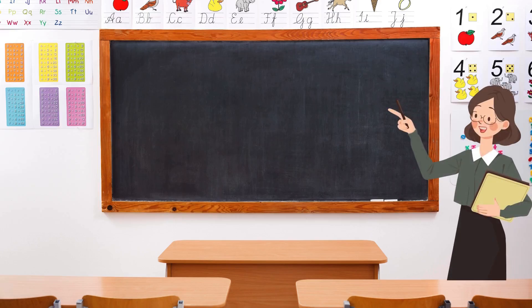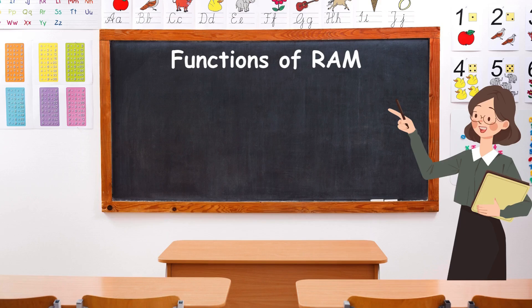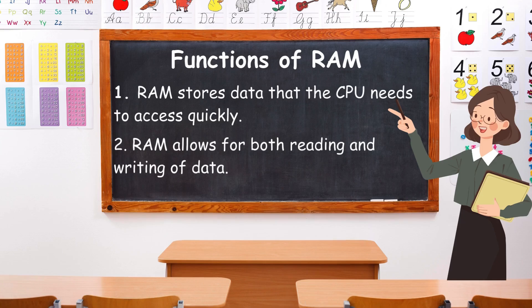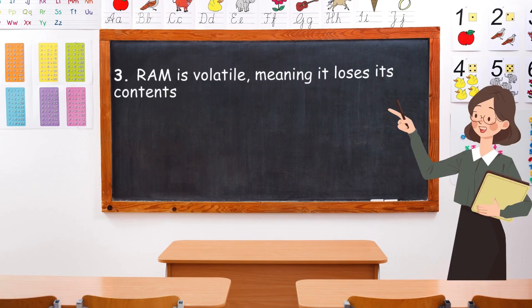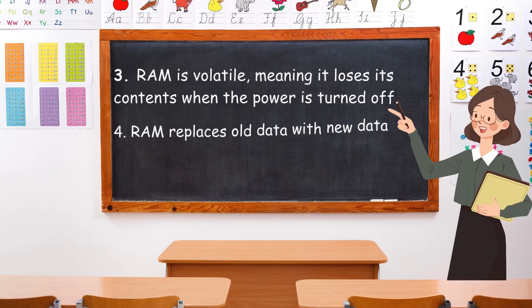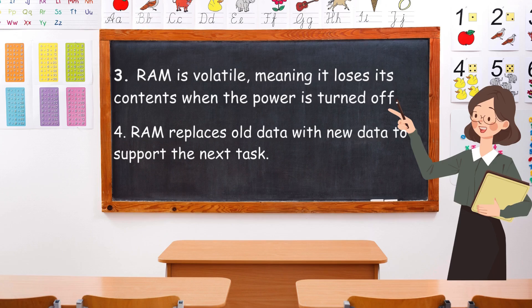It's time to learn the functions of RAM. 1. RAM stores data that the CPU needs to access quickly. 2. RAM allows for both reading and writing of data. 3. RAM is volatile, meaning it loses its contents when the power is turned off. 4. RAM replaces old data with new data to support the next task.